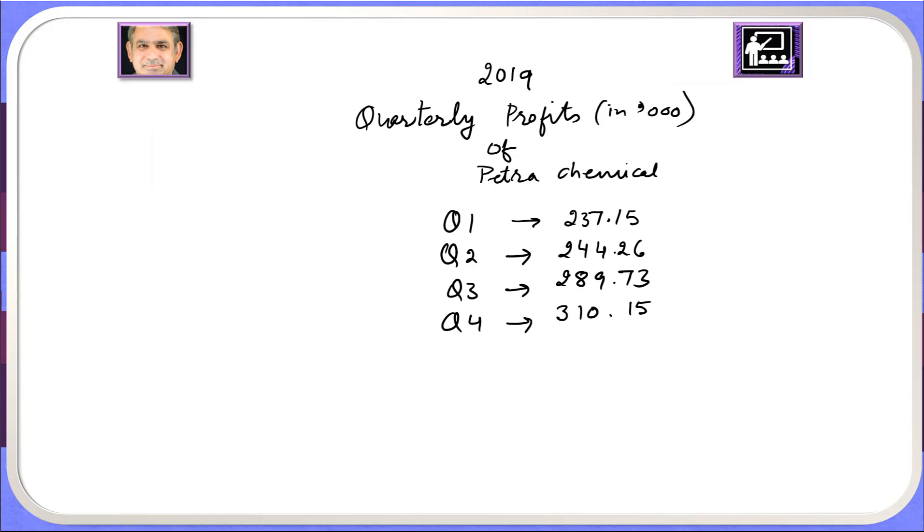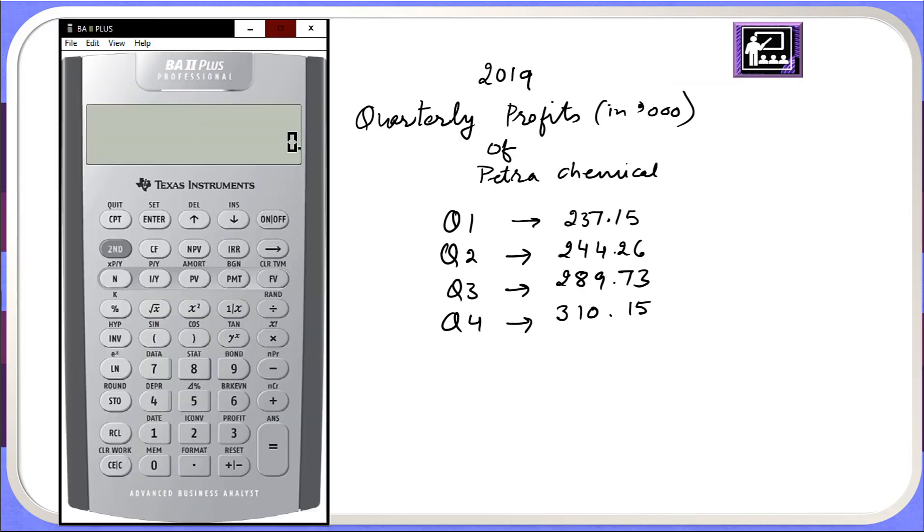Let me first of all pull BA II Plus calculator. Now here when we have turned it on, we will enter the first number 237.15, so this is profit of first quarter. I will enter it into first memory location.